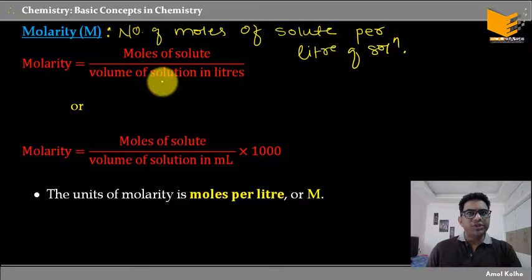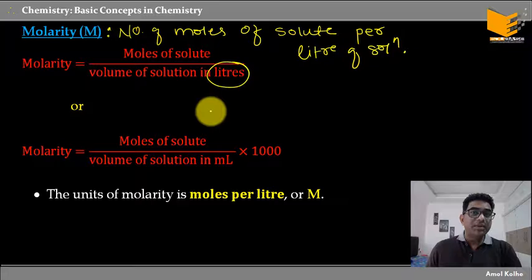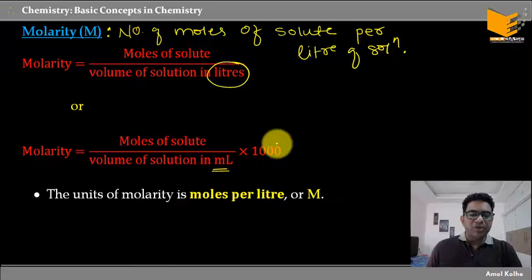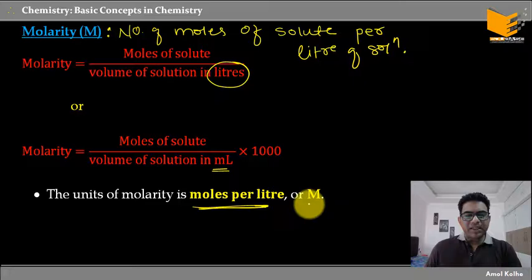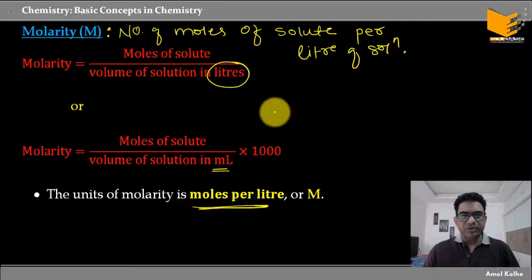The equation is: molarity is equal to moles of solute divided by volume of solution in liters. But generally we don't take volume in liters — we often take smaller volumes like 100 ml or 200 ml. If we take volume in milliliters, we multiply by 1000. The unit of molarity is moles per liter, or capital M.